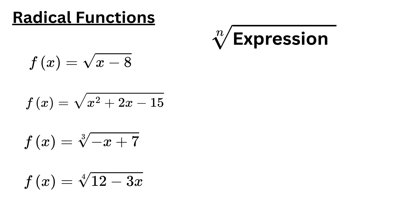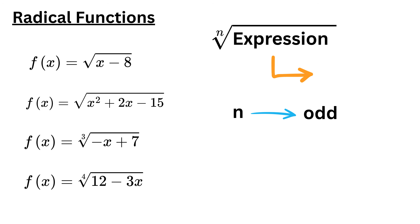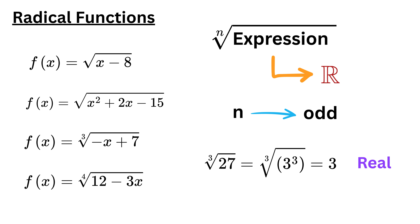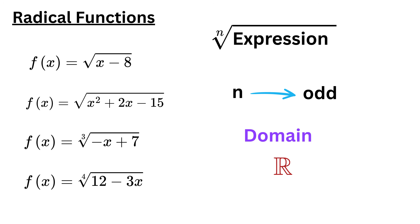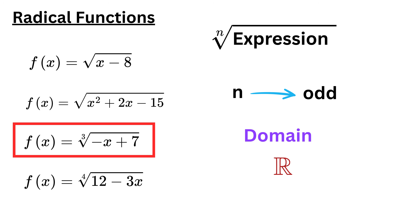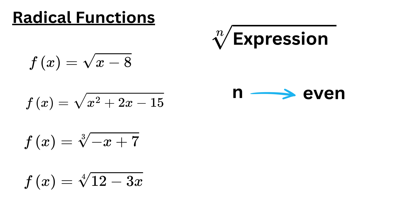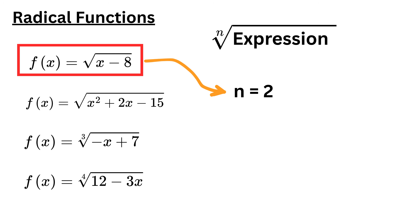Radical functions contain a variable under a radical or a root. They can have either an odd index or an even index. When the index is odd, the expression under the radical can be any real number, because taking an odd root of any real number always results in a real number. This means their domain is all real numbers. When a radical function has an even index, the expression under the radical must be greater than or equal to zero. To find the domain, set the expression under the radical greater than or equal to zero and solve the inequality. If the index of the radical is not shown, it is assumed to be 2, which is an even number, commonly known as the square root.